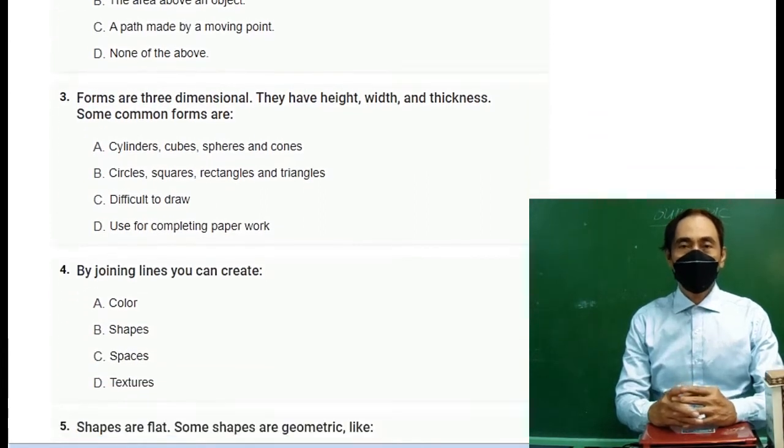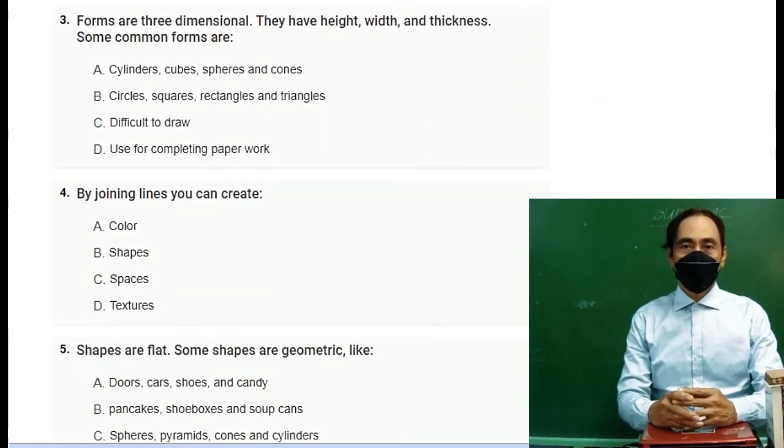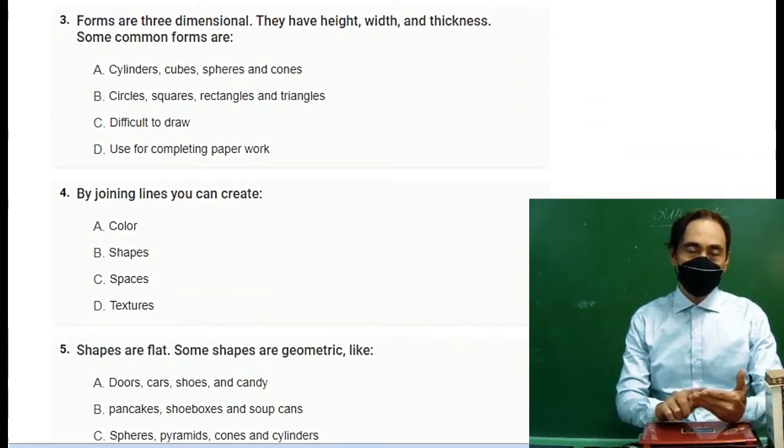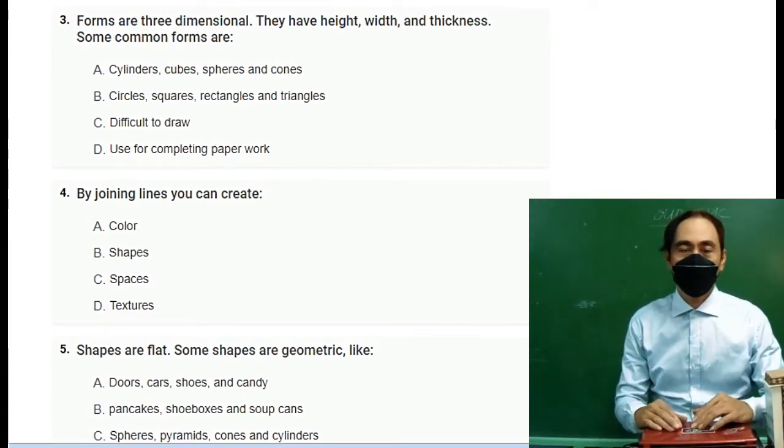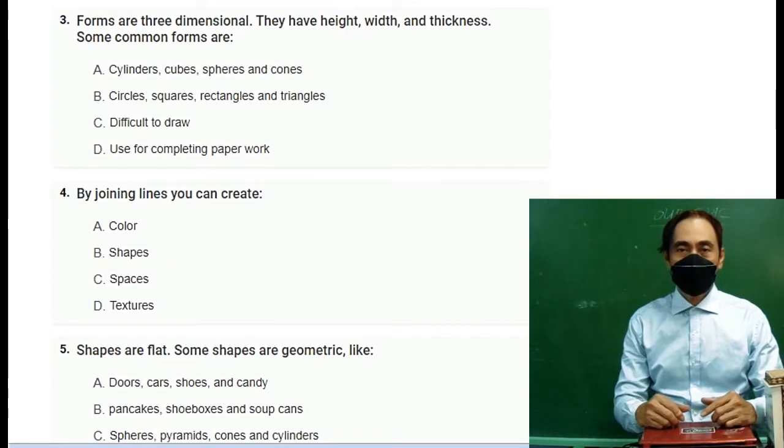Number three: Forms are three-dimensional. They have height, width, and thickness. Some common forms are A. cylinders, cubes, spheres, and cones, B. circles, squares, rectangles, and triangles.